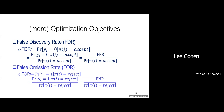To answer this question, let's introduce some more objectives. First, there is the false discovery rate, which is the fraction of unskilled candidates accepted by the policy. The false discovery rate is proportional to the false positive rate given a certain probability of being accepted. Similarly, we can define the false omission rate, which is the fraction of skilled candidates rejected by the policy. By Bayes' rule, the false omission rate is proportional to the false negative rate given some acceptance or rejection probability.